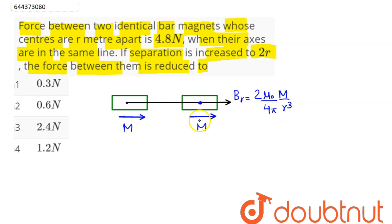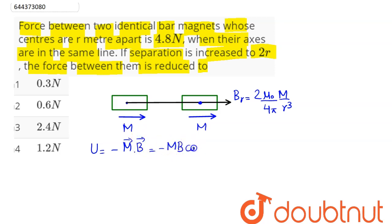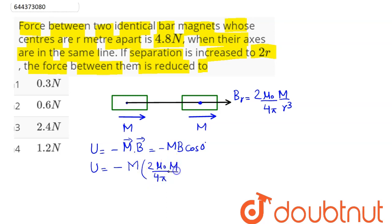In this uniform magnetic field, the bar magnet has magnetic potential energy given by U = −m·B = −mB cos(0°), since the angle between the magnetic moment and field is zero. So the magnetic energy is U = −(2 mu naught / 4pi) × (m² / r³).